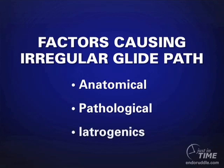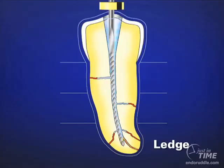The third reason we might not have a regular glide path is iatrogenic events. When dealing with retreatment scenarios, it's normal to have blocked and ledged canals. Even if we can get back into the physiologic canal and negotiate through the apical one-third to establish working length and patency, it isn't necessarily true that we would be able to eliminate the large ledge - in which case we wouldn't expect to be using rotary or reciprocating instruments.